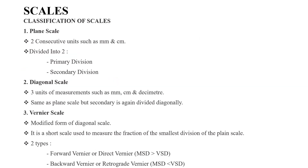The scale classification: the first classification is the plane scale. The plane scale uses consecutive units — for example, 1 millimeter to 1 centimeter. It has a primary division and a secondary division. The second classification is the diagonal scale.